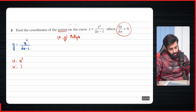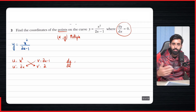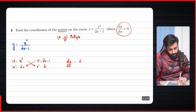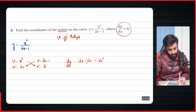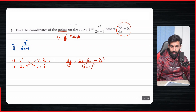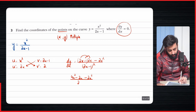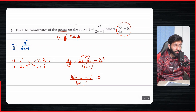Let u equal x squared, so u prime is 2x. And v equals 2x minus 1, so v prime equals 2. Applying the quotient rule: v u prime minus u v prime over v squared. So v u prime is 2x minus 1 into 2x, and u v prime is 2x squared, over 2x minus 1 the whole thing squared. Expanding: 2x into 2x gives 4x squared, minus 1 into 2x gives minus 2x, then minus 2x squared, all over 2x minus 1 squared, set equal to zero.